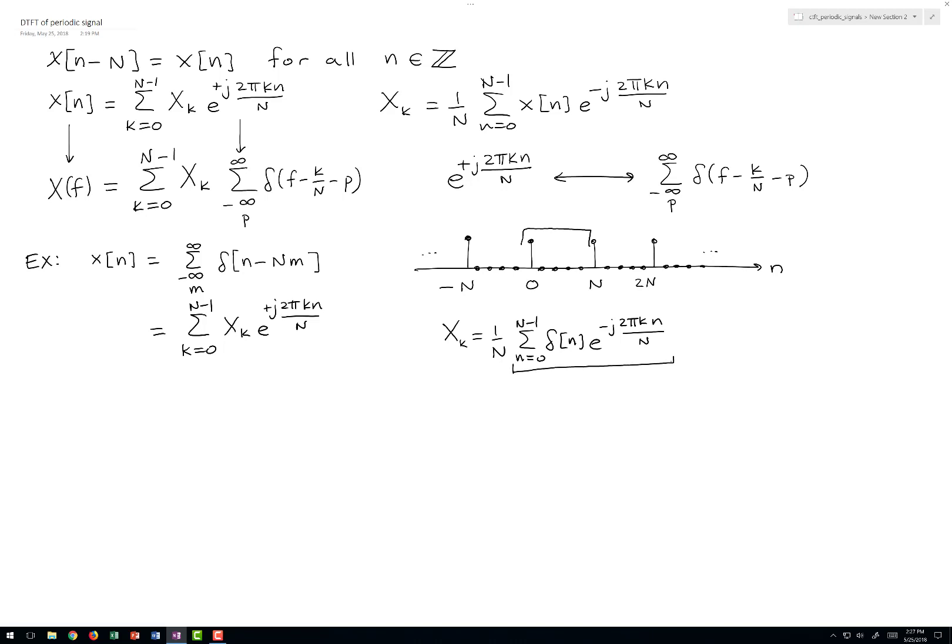And I won't go through all of the details, but this sum is equal to 1 so that our Fourier series coefficients are all equal to 1 over N.